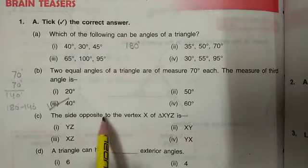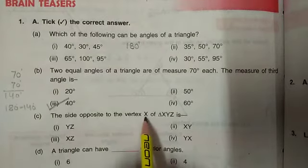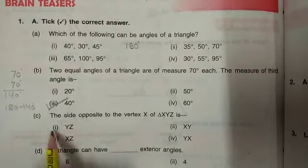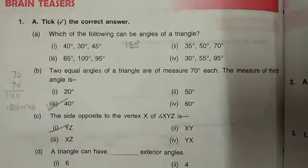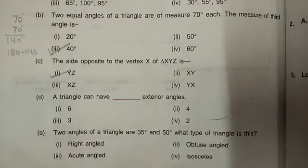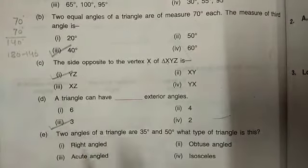Side opposite to vertex X. We have already discussed in our previous worksheet. If vertex X is given, the opposite side will be YZ. Next, a triangle can have blank exterior angles. Every time we have observed, only three exterior angles were there.